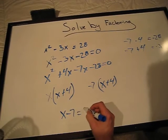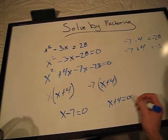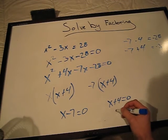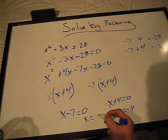This gives us (x - 7) = 0 and (x + 4) = 0. These are just linear equations, so x = -4 and x = 7.